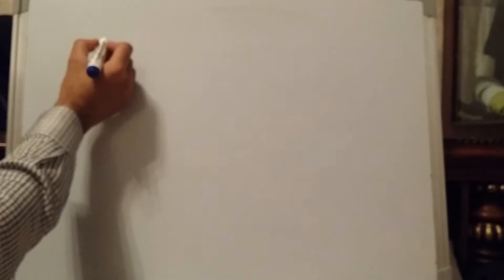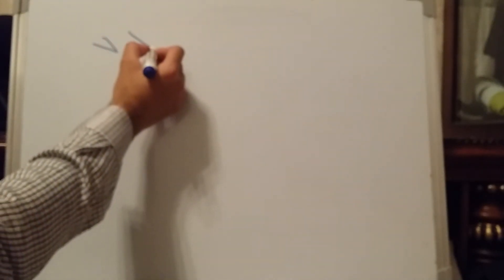Now we will discuss according to the diagram. For example, this is our liver — I will simply draw the smaller ductules.